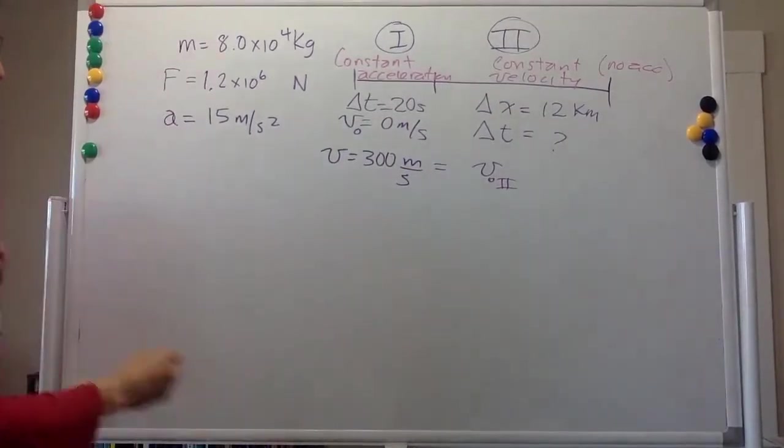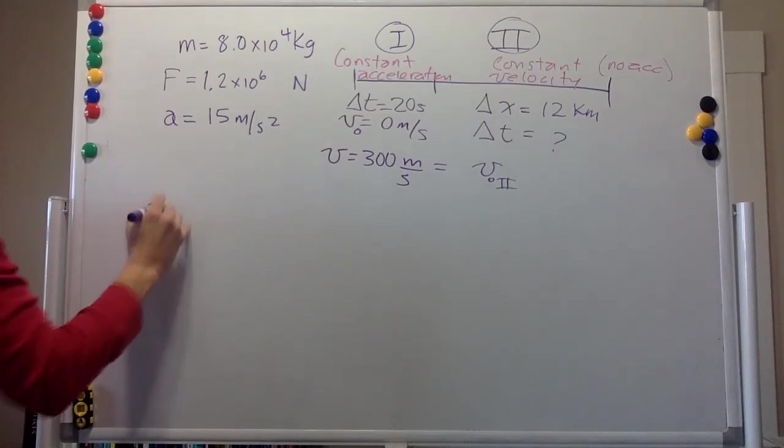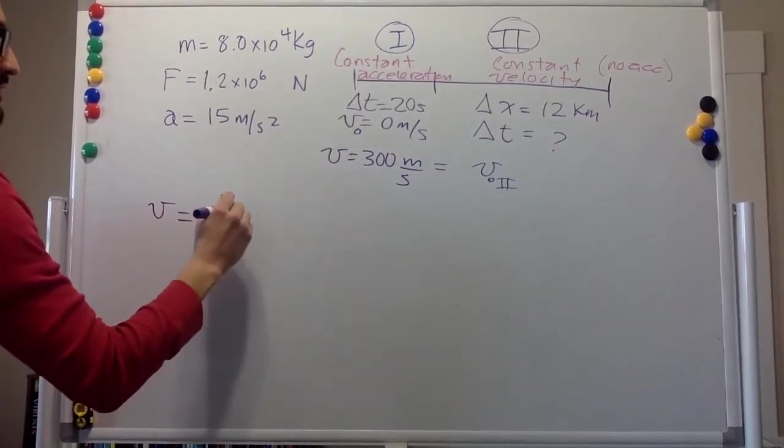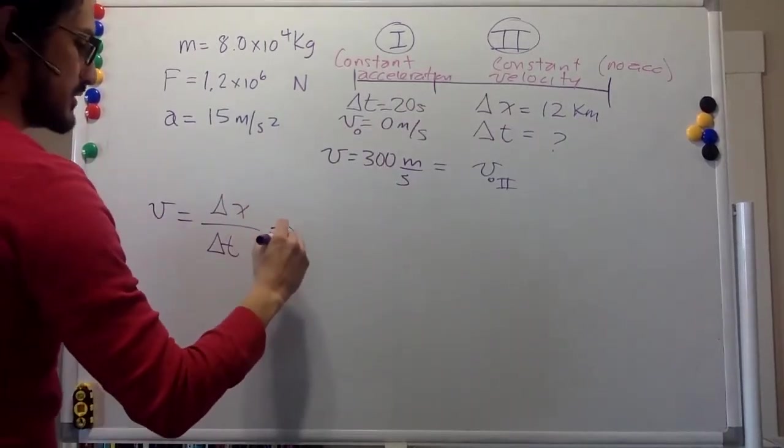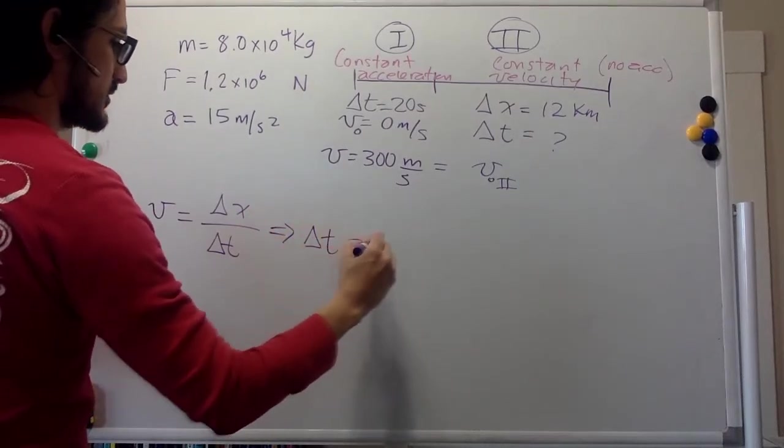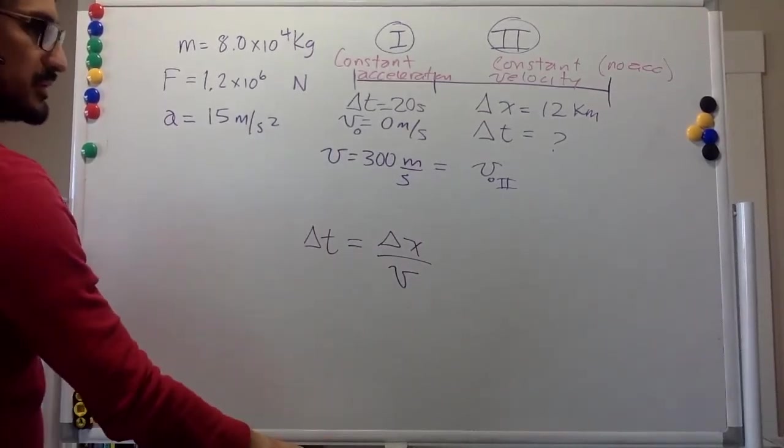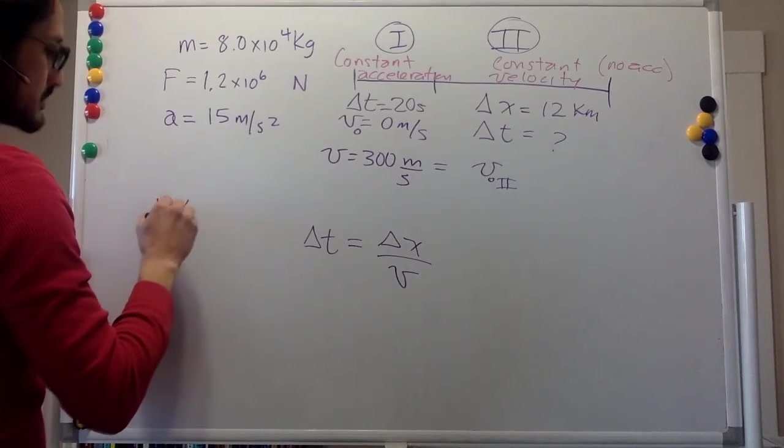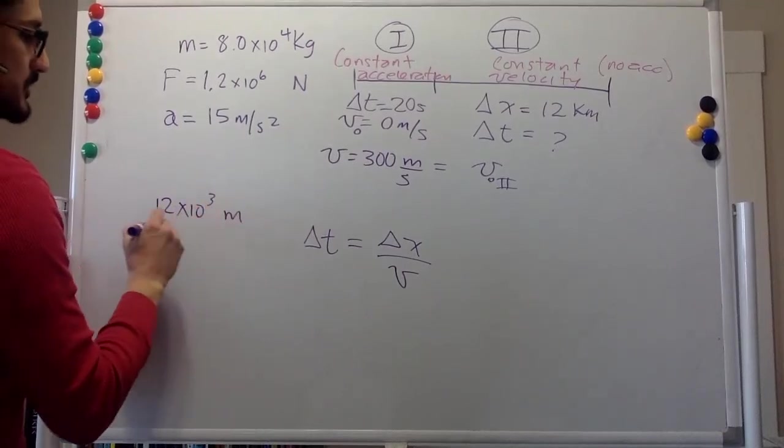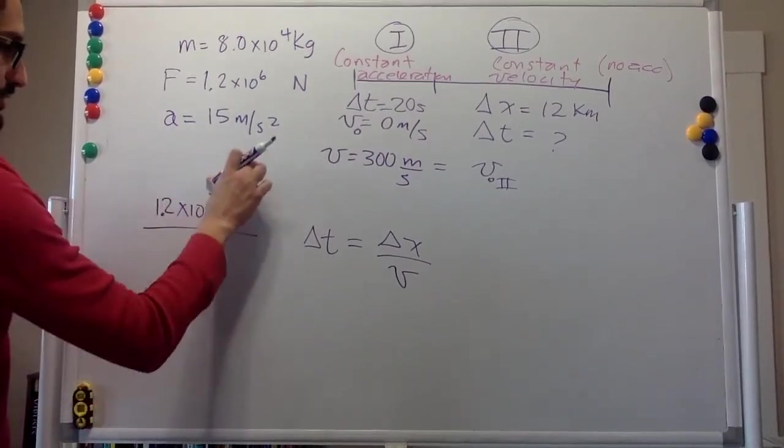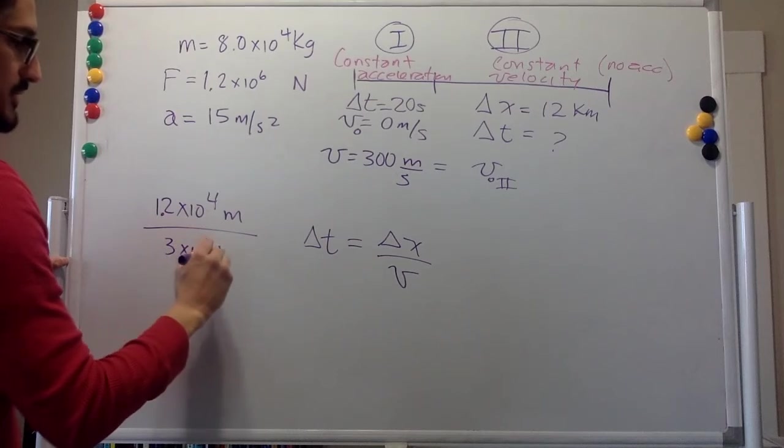So what we want to know ultimately is this delta time in the second segment. So we know that the velocity is just the displacement divided by the time. So this implies that the time is the displacement divided by the velocity. And the displacement is 12 kilometers, so that's 12 times 10 to the 3 meters. So that's 1.2 times 10 to the 4 meters.